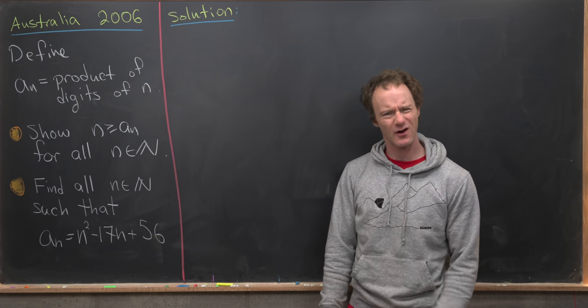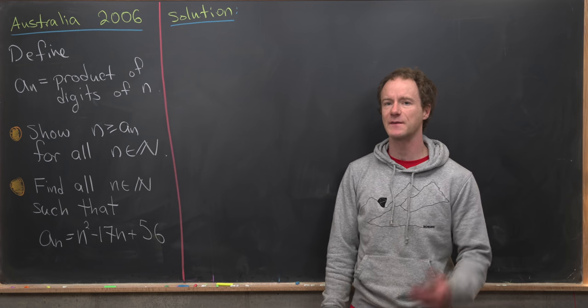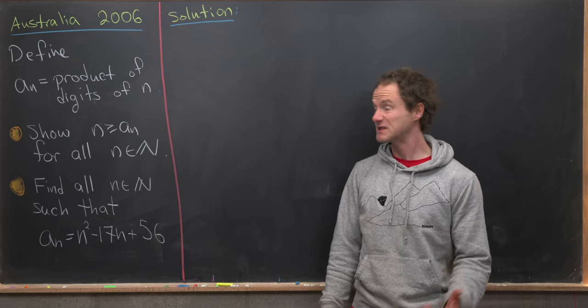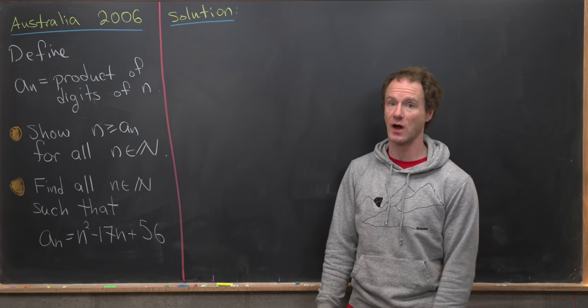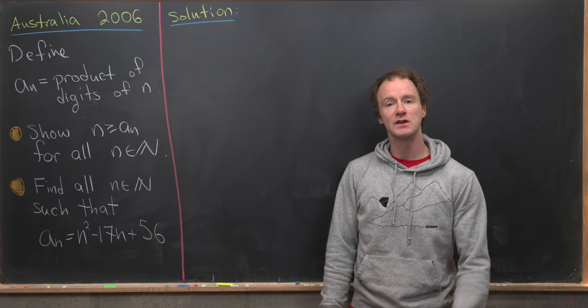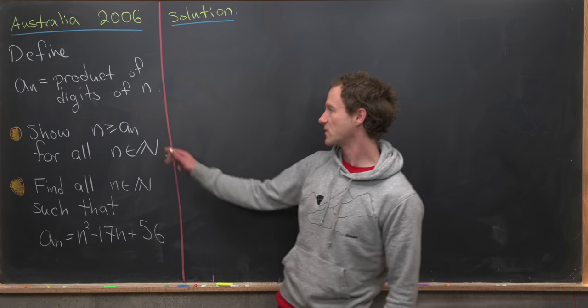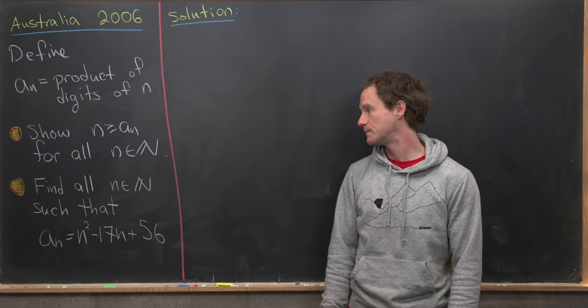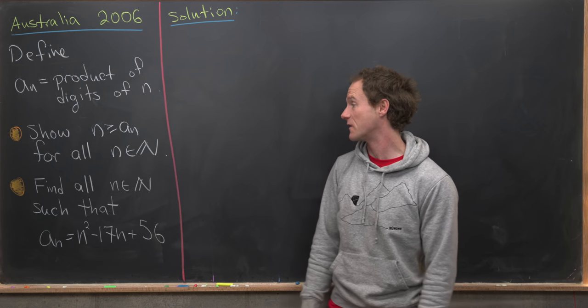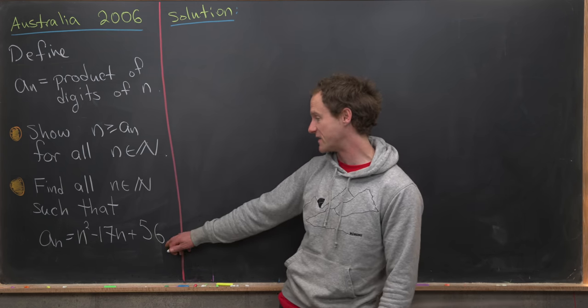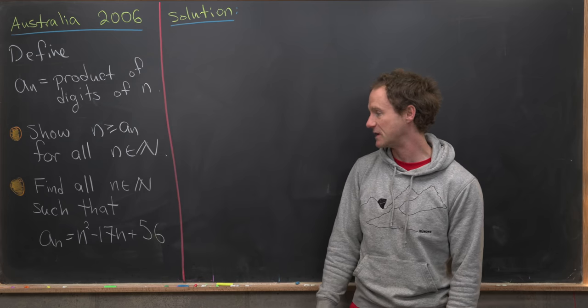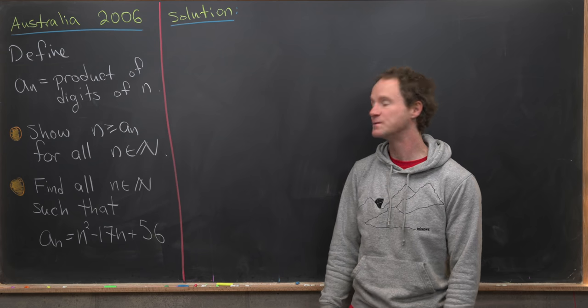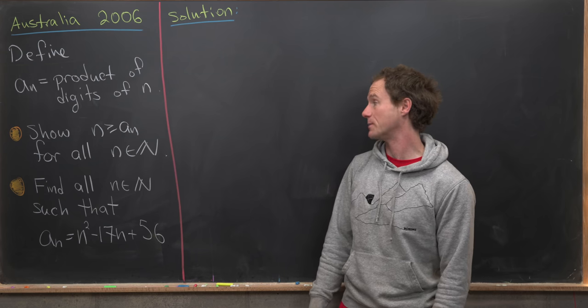I think this is pretty interesting. There are a bunch of problems on YouTube, including some that I've done, where we look at the sum of digits function. This is like a version of that, but the product of the digits instead. So we have two goals. Our first is to show that n is bigger than or equal to a_n. And our second is to find the values of n that satisfy this equation: a_n = n² - 17n + 56. Let's jump into it.